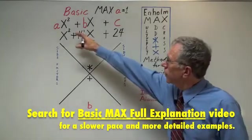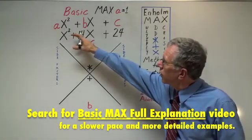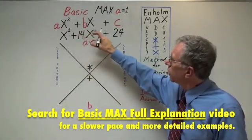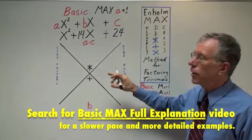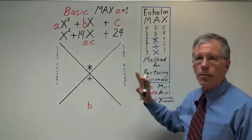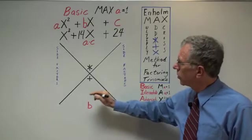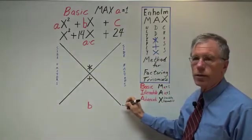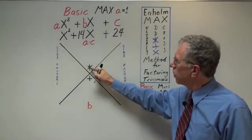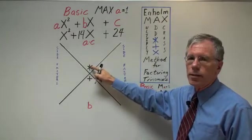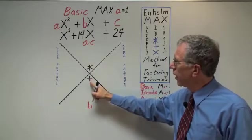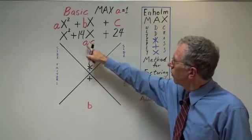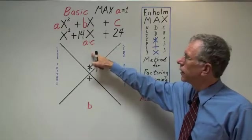We start with the quadratic expression a times x squared plus bx plus c. What you do with basic max is you start by creating four areas by marking the cross or x. You then place the multiplication symbol in the top area and the addition symbol in the bottom area. We multiply a times c to fill in the top area.